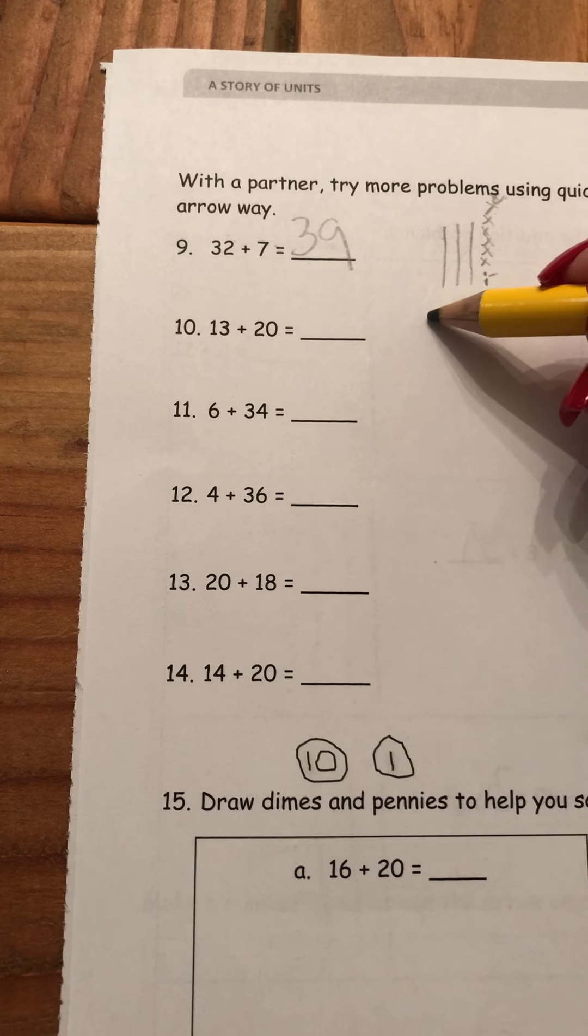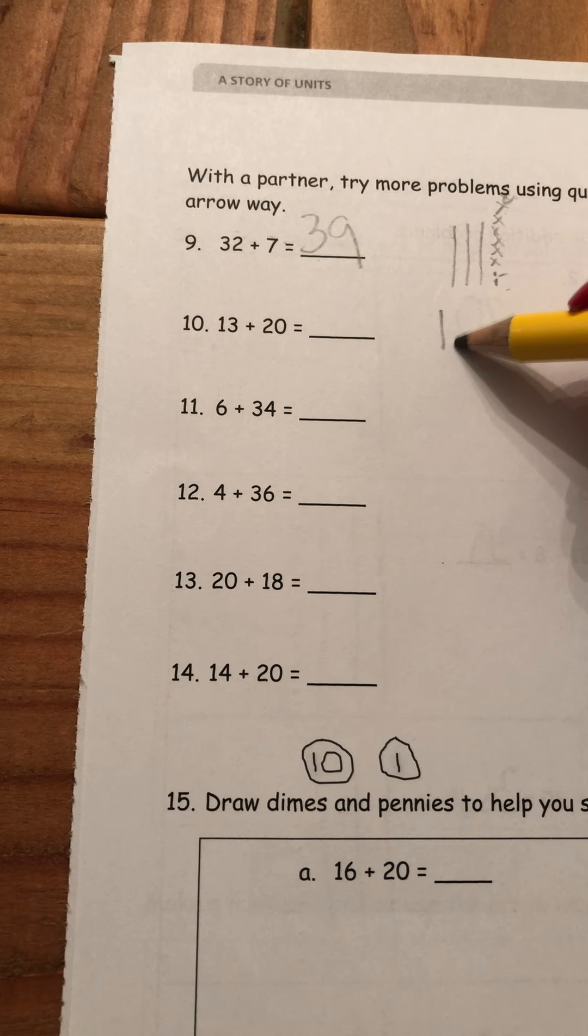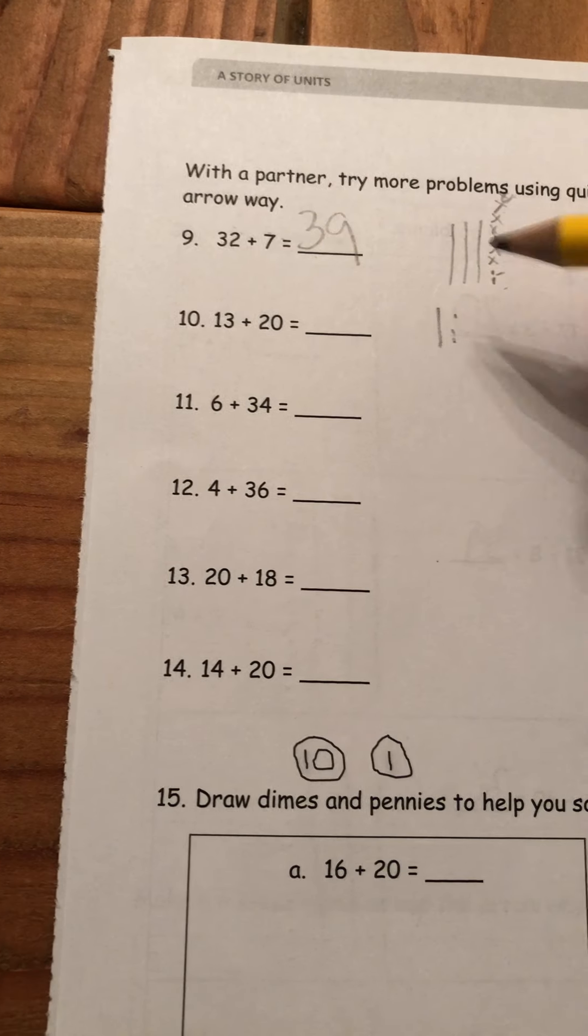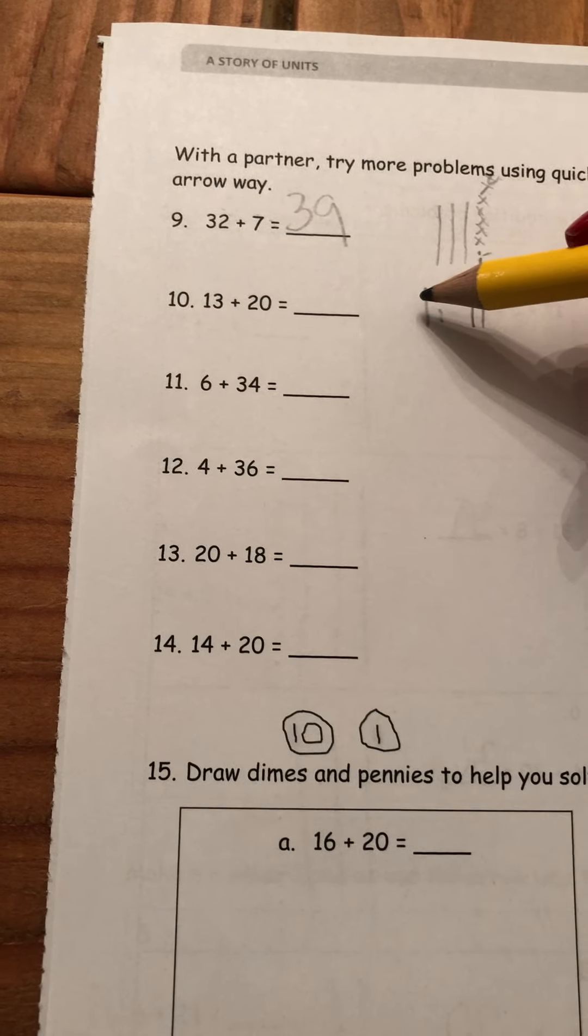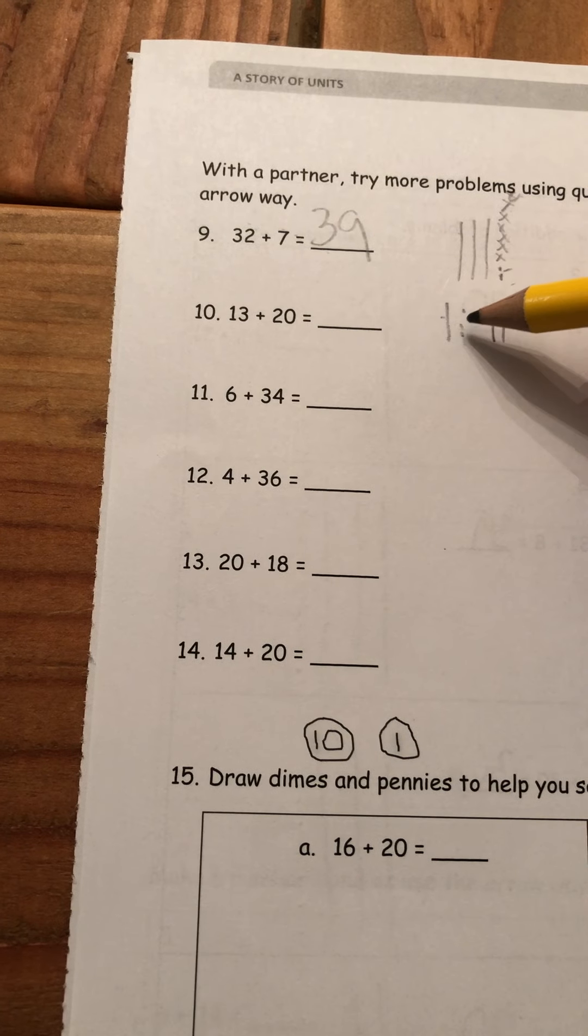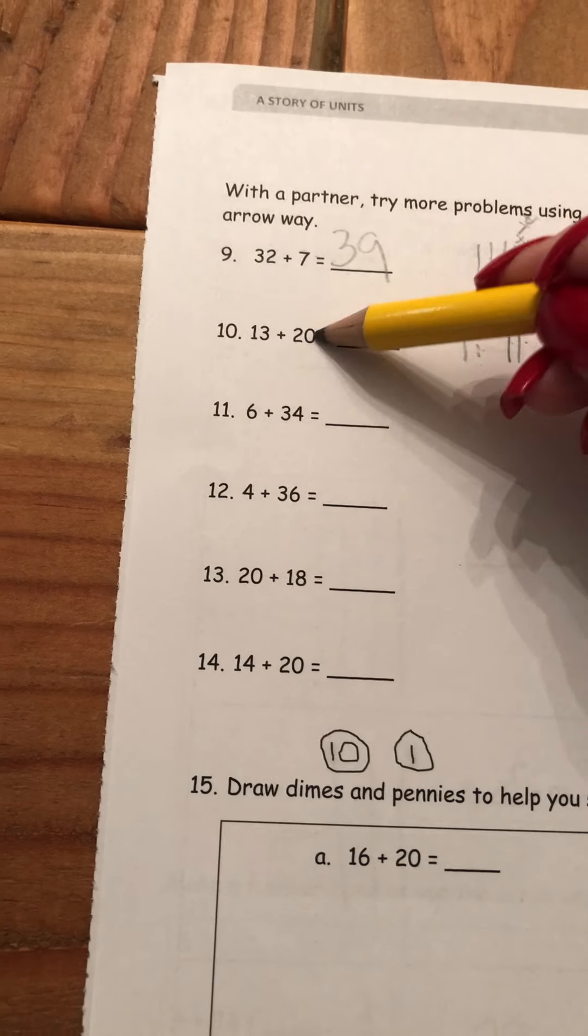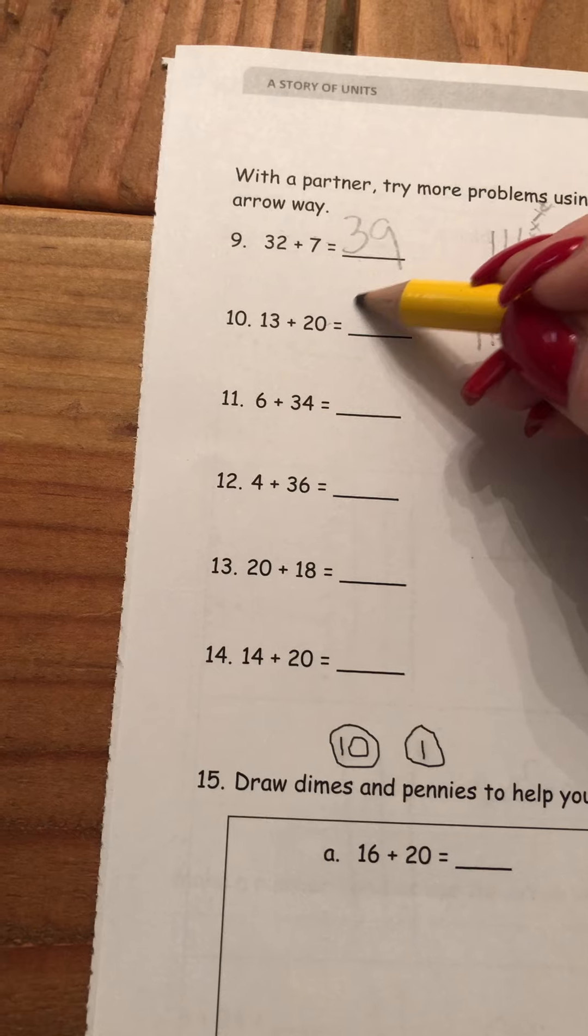Okay, quick 10s. Here we go. 10, 1, 2, 3 for 13. And then 20 is just 2 quick 10s. So I have 10, 20, 30, 31, 32, 33. 20 plus 13 is 33.